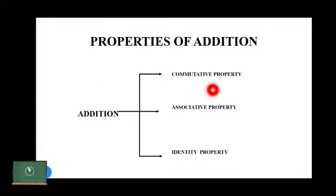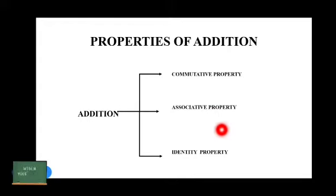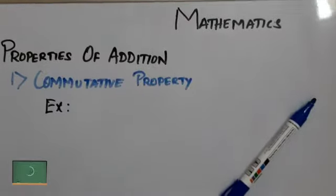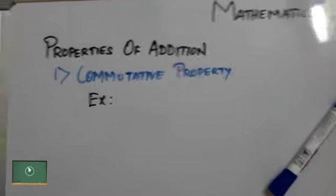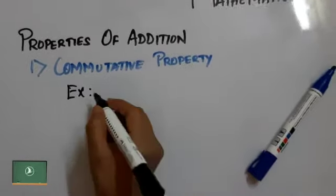The three properties are: commutative property, associative property, and identity property. Let's get to know about these with example problems.